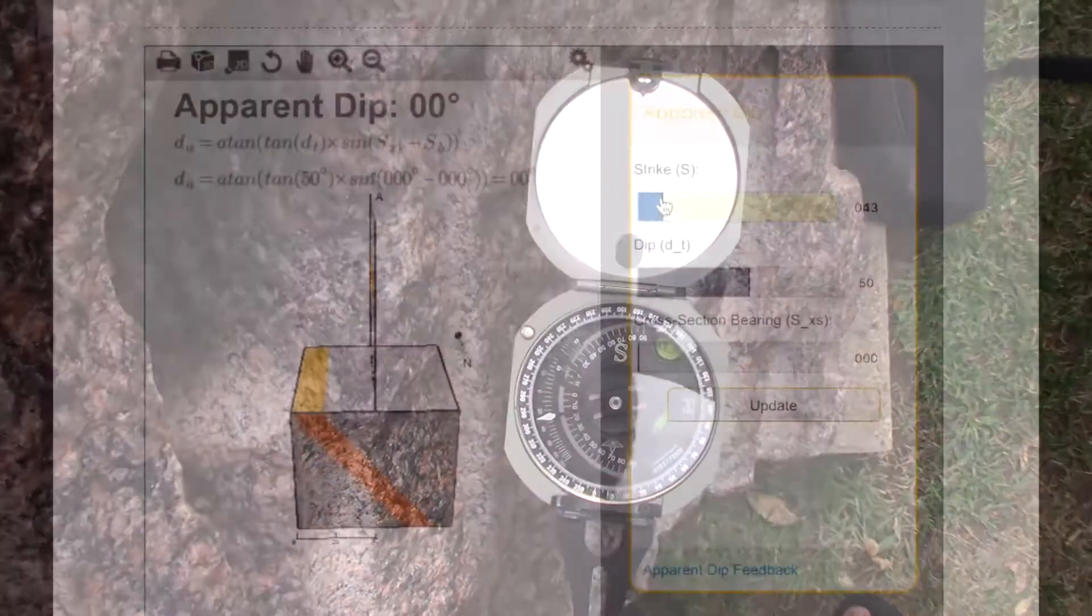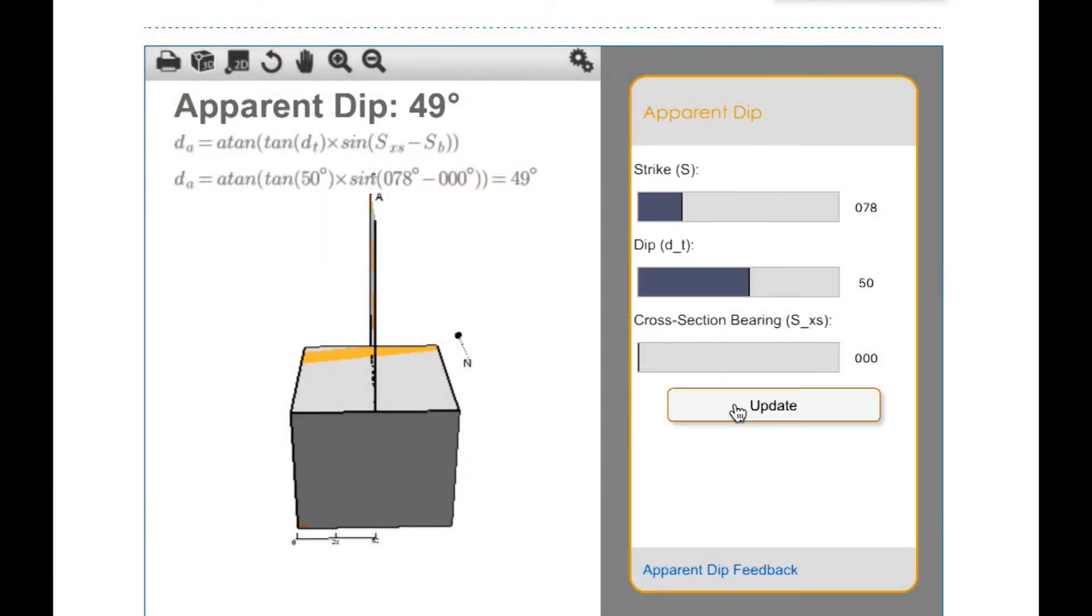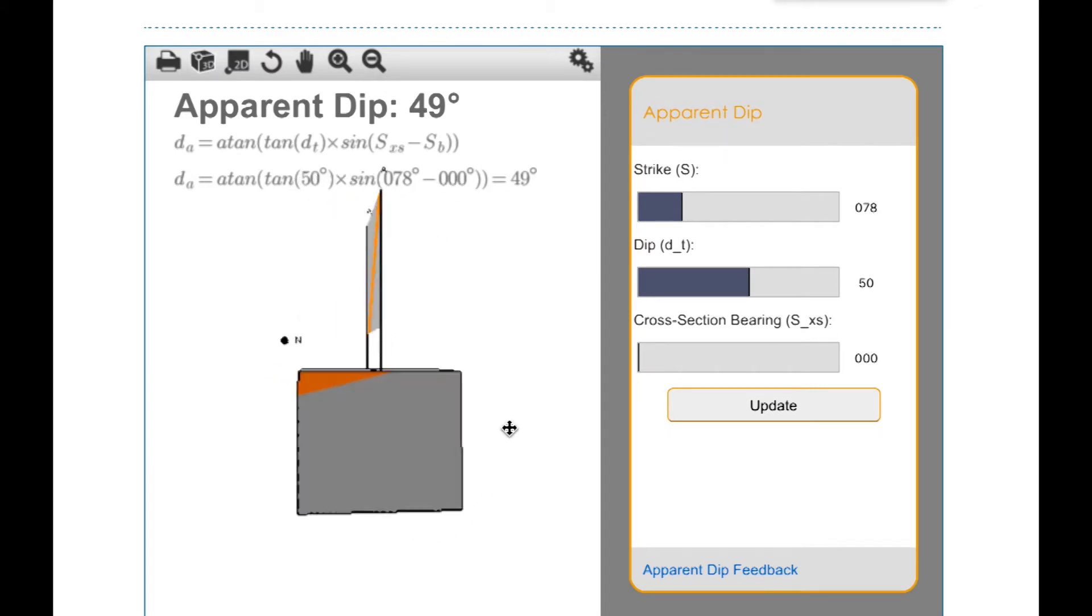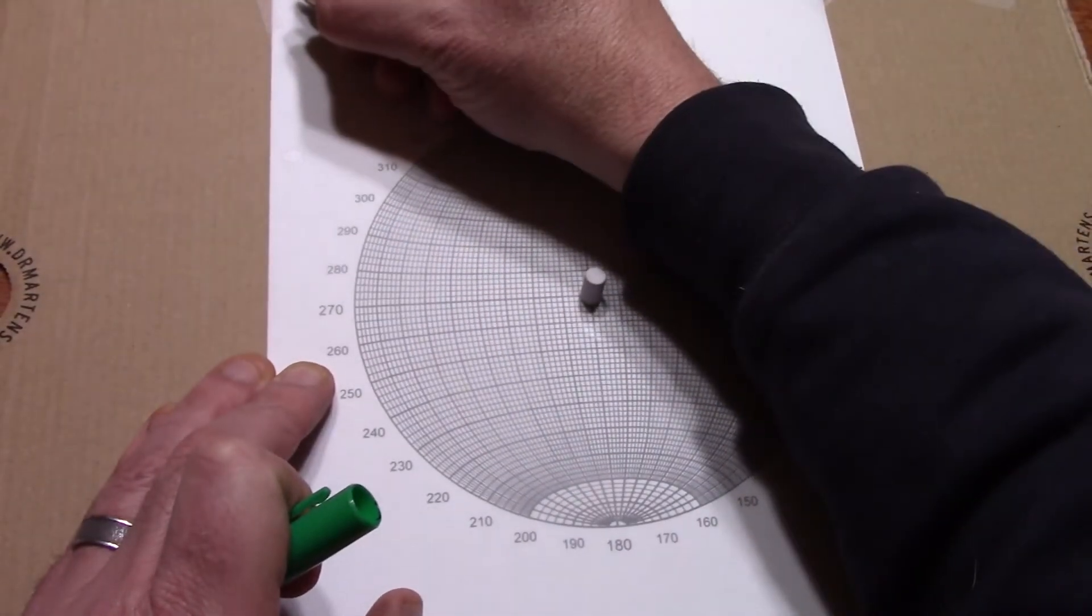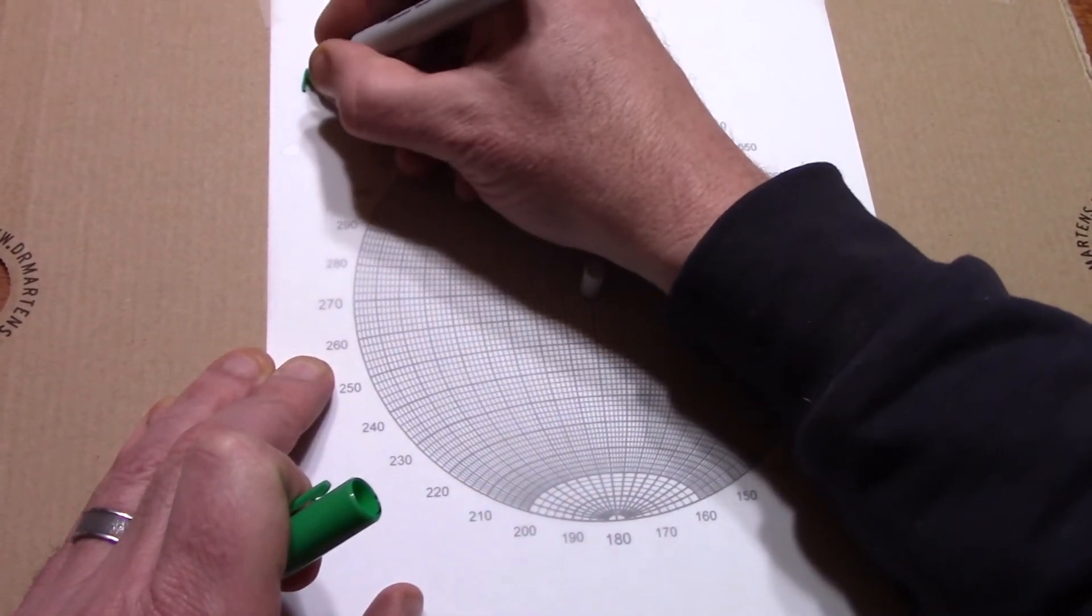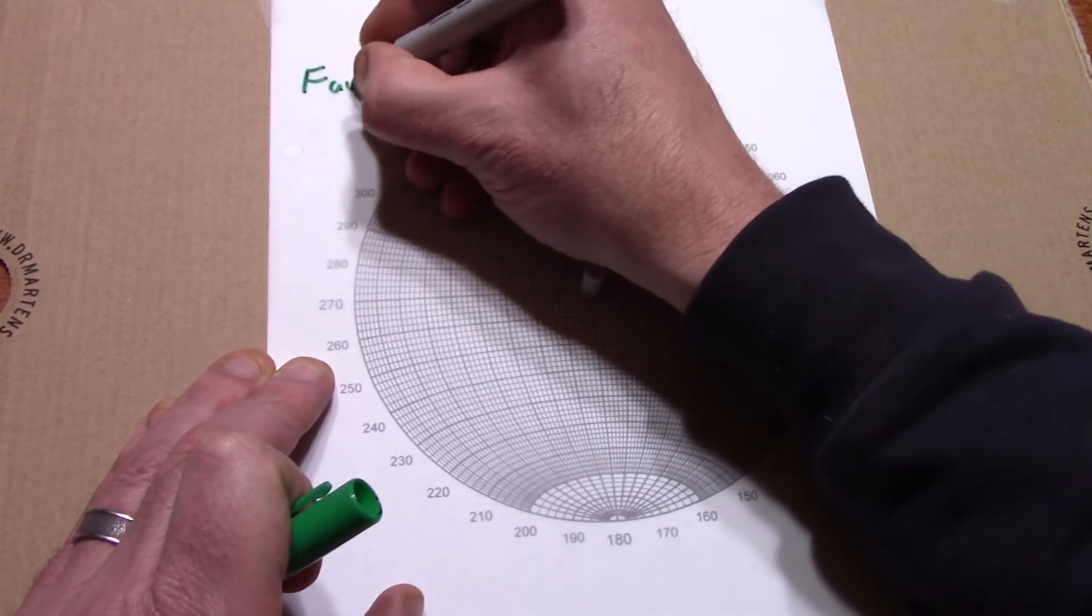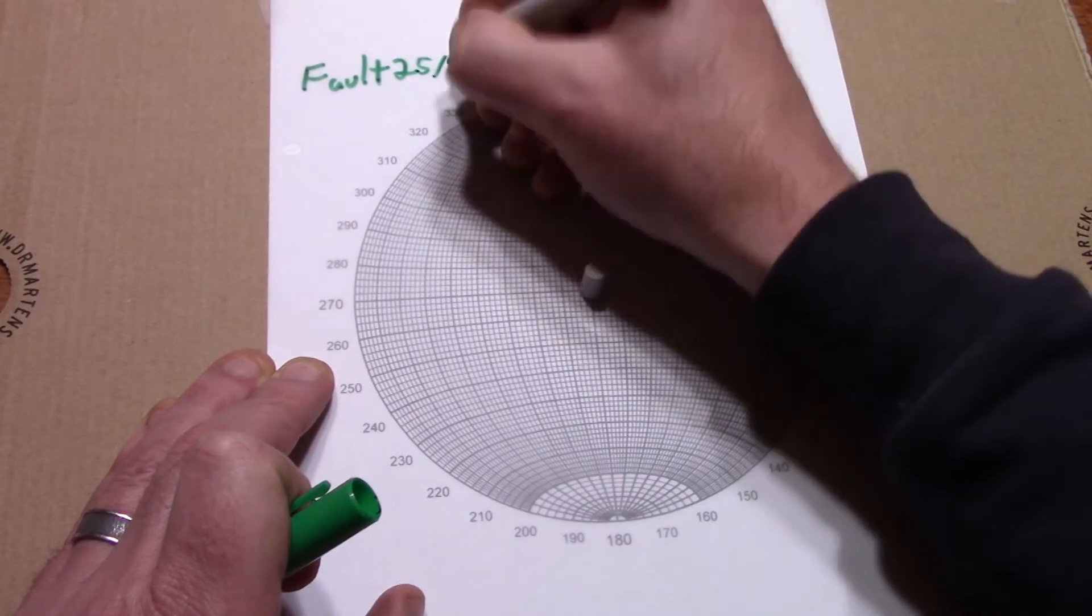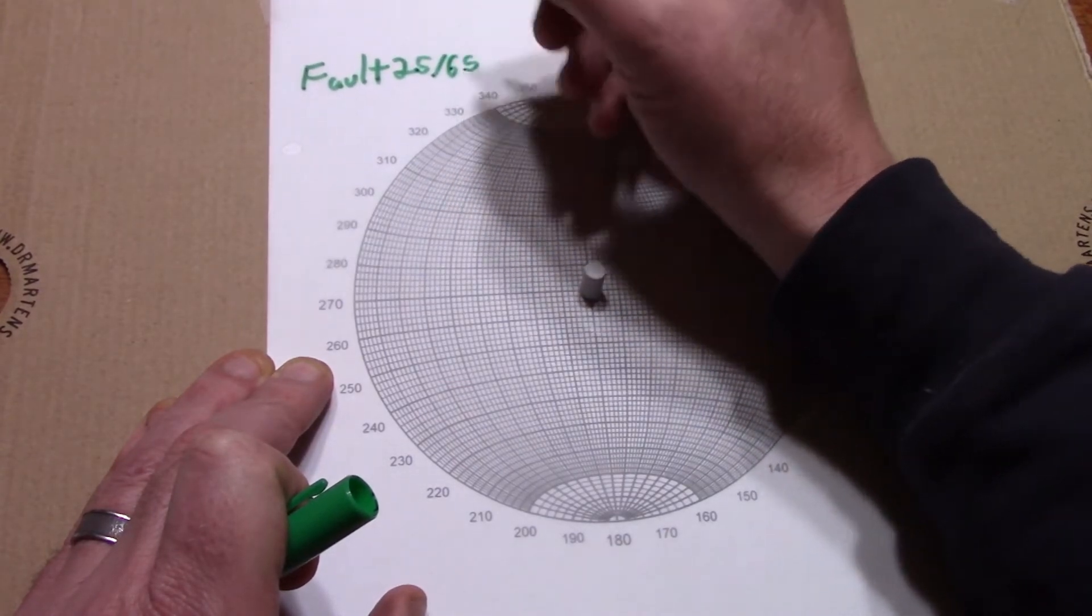Apparent dip versus true dip is a concept we have met before and ran into some lovely equations to deal with it, but I'm here to say that StereoNets can do this for you too. Start off by realizing that apparent dip of a plane in a certain direction is like talking about the plunge of a lineation in that direction on that plane.